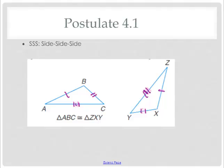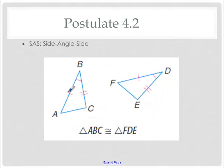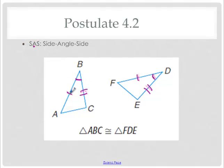Next one: side, angle, side. What we need are two pairs of sides. What's special is we need the angle in between the two sides to be the one that's congruent. Take a look at where the A is — it's in between the two S's, just like it is on the picture. So SAS means side with an angle in between and then the other side.